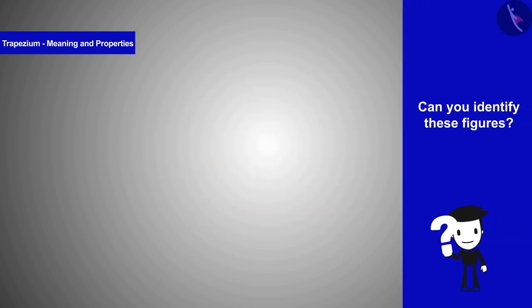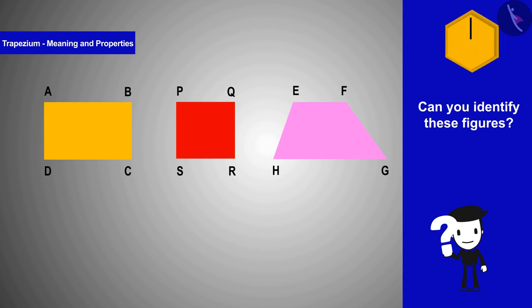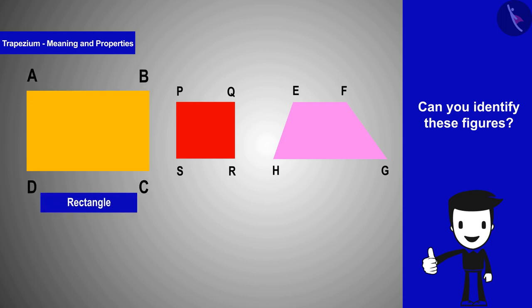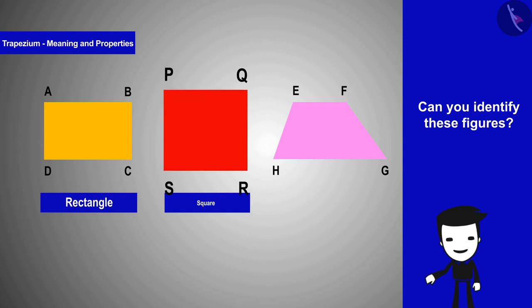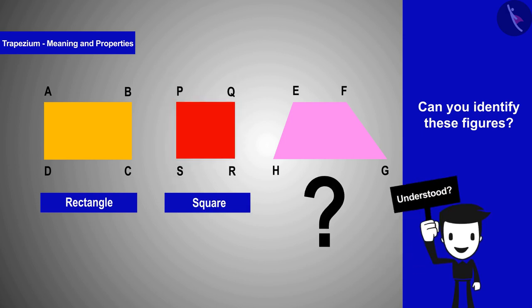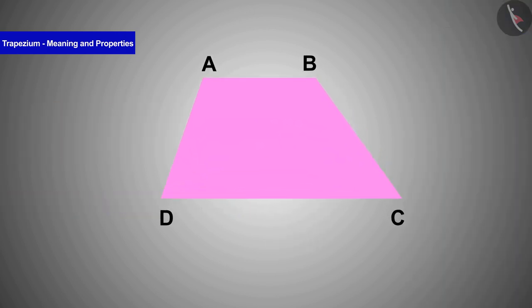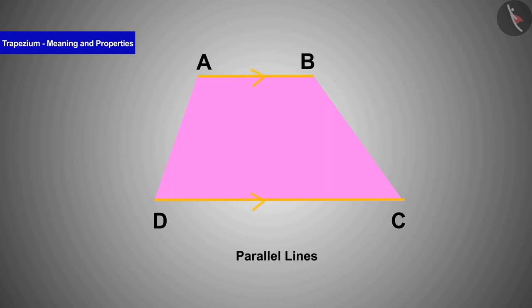Can you identify these figures? Well done — all these figures are quadrilaterals in which the yellow figure is a rectangle and the red figure is a square, but we do not know about the pink figure. If you notice, you will find that a pair of sides in this figure are parallel. Arrow marks indicate parallel lines.